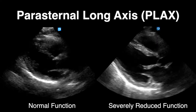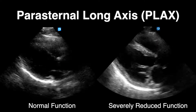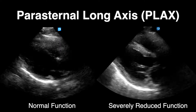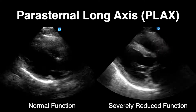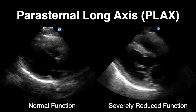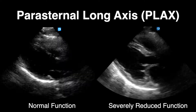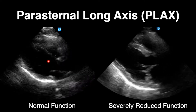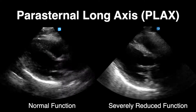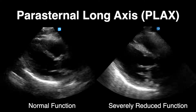Looking at normal cardiac function versus severely reduced side by side: in normal function the myocardial walls of the left ventricle are almost kissing. In the severely reduced EF those walls are barely moving toward each other. The mitral valve in the severely reduced image is just barely opening, whereas in the normal image you can see the mitral valve leaflet flipping up and hitting close to the septum. You also see the atrial kick filling the left ventricle.